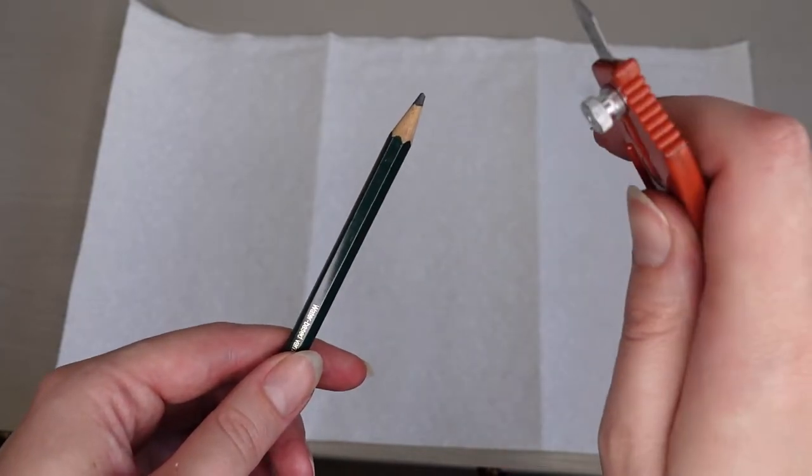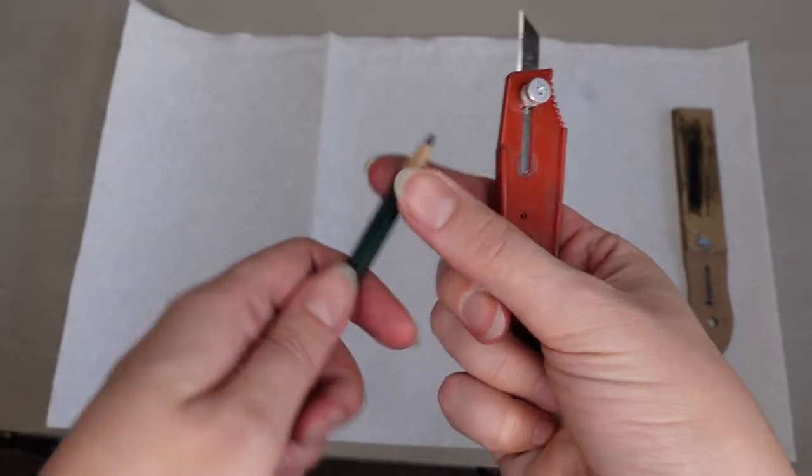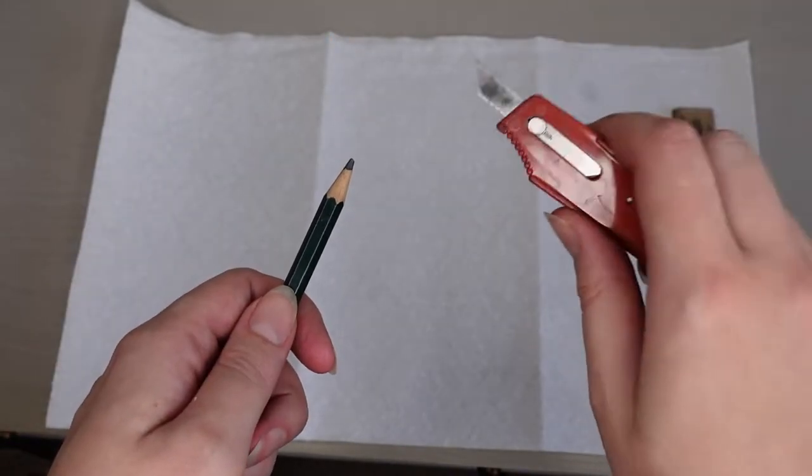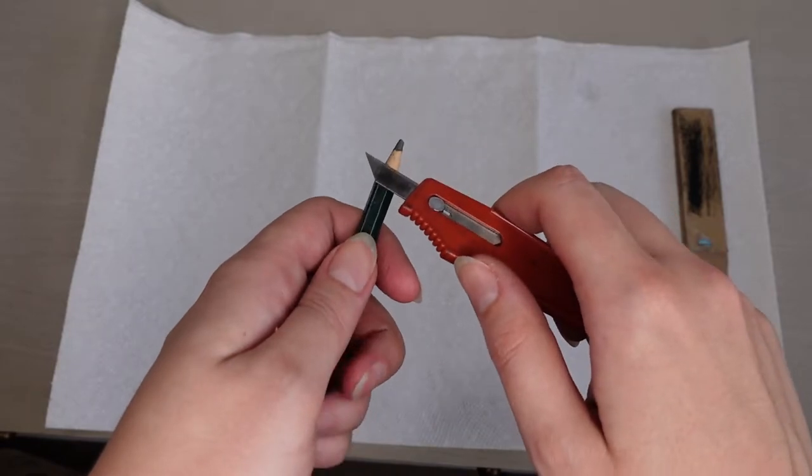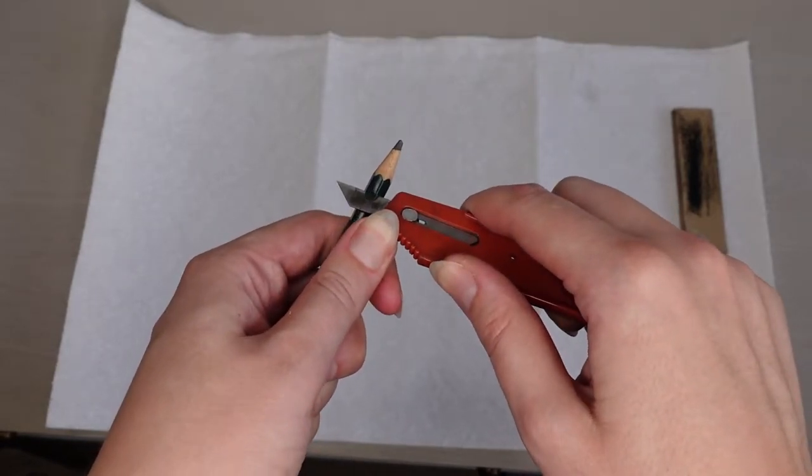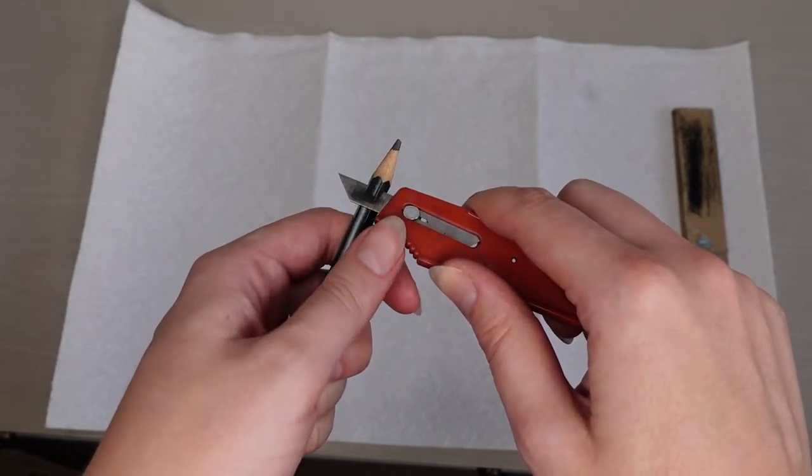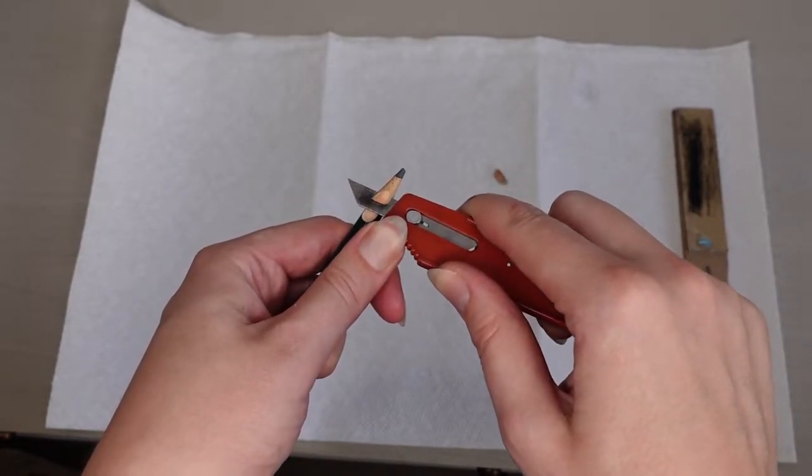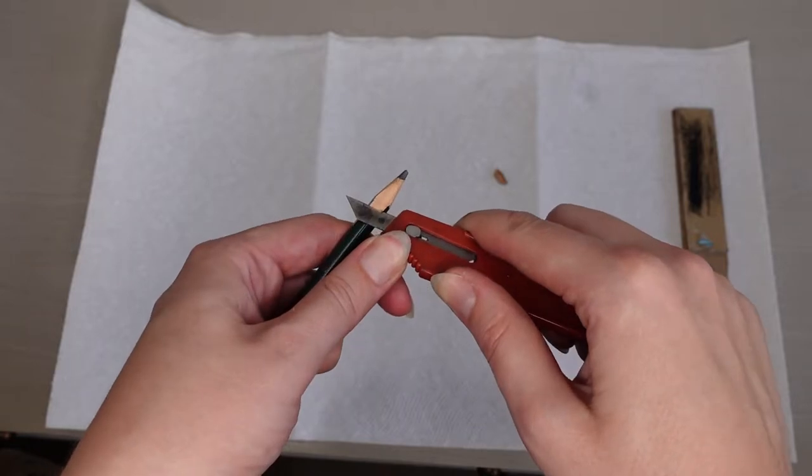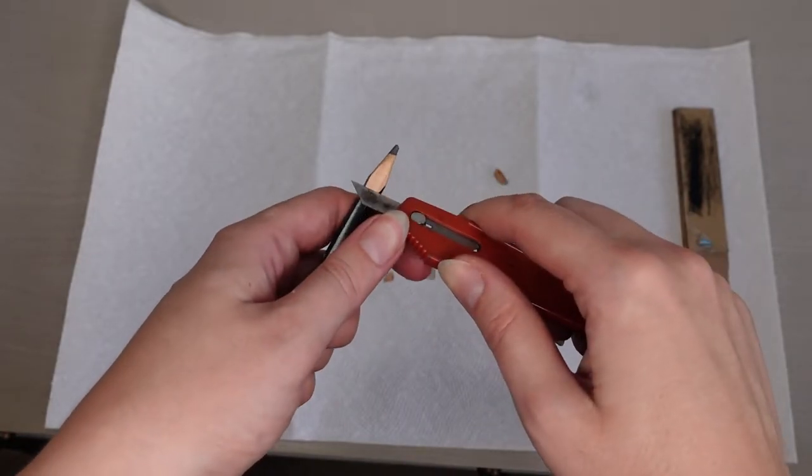And what you want to do is hold the knife in your dominant hand and the pencil in your non-dominant hand. I'm right-handed, so that's why I'm holding the knife in my right hand. And what you're going to do is you're going to see how I'm using this thumb to sort of control the knife and trim away very slowly the wood.